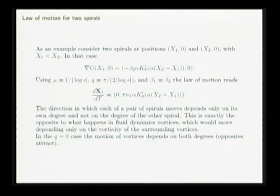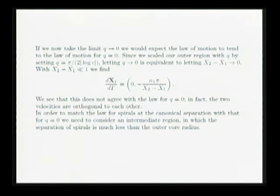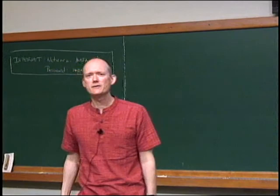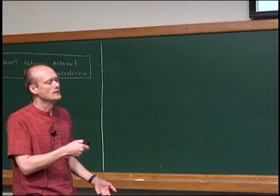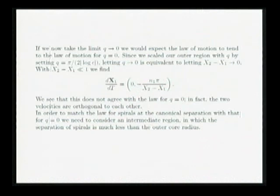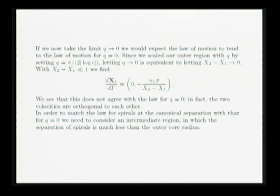Something strange about this result: the motion is also orthogonal to the line of centers — it's in the y direction, while the spirals are both on the x-axis. This is the opposite direction to vortices, and the sense of motion only depends on your own winding number, not your partner's winding number. For fluid vortices, the motion of one wouldn't depend on its own winding number, only on the fluid generated by the other. But here it's the other way: the motion of this spiral only depends on its own winding number. You might have expected that taking q to zero would recover the q equals zero answer, but in fact the direction is completely wrong — the motion is orthogonal to the line of centers, whereas for q equals zero it was along the line of centers.